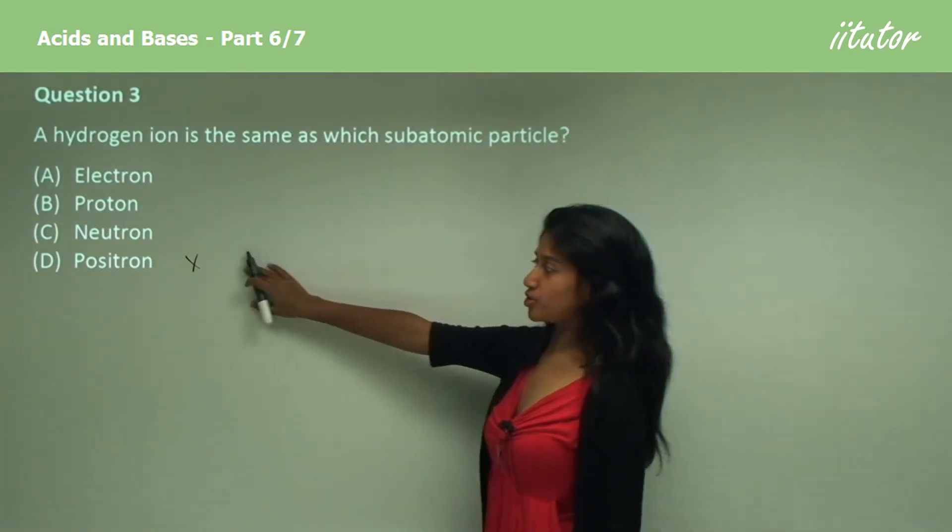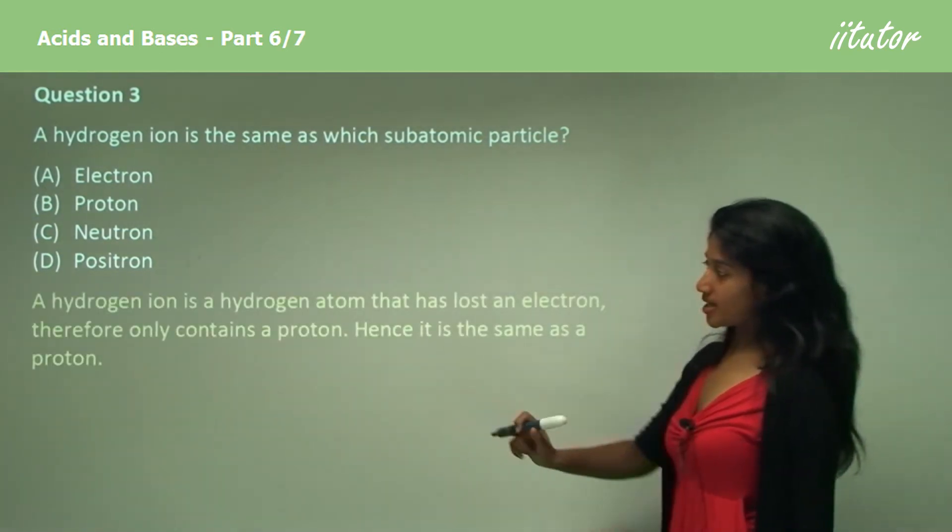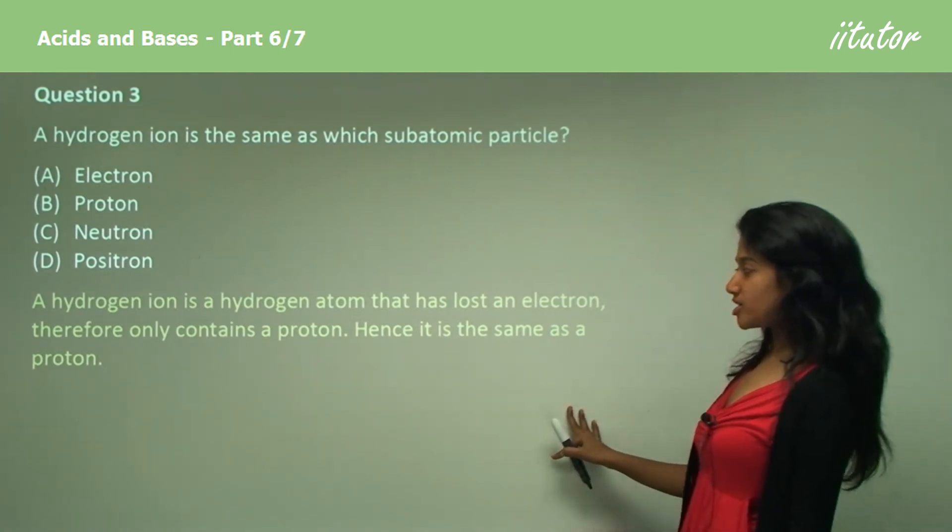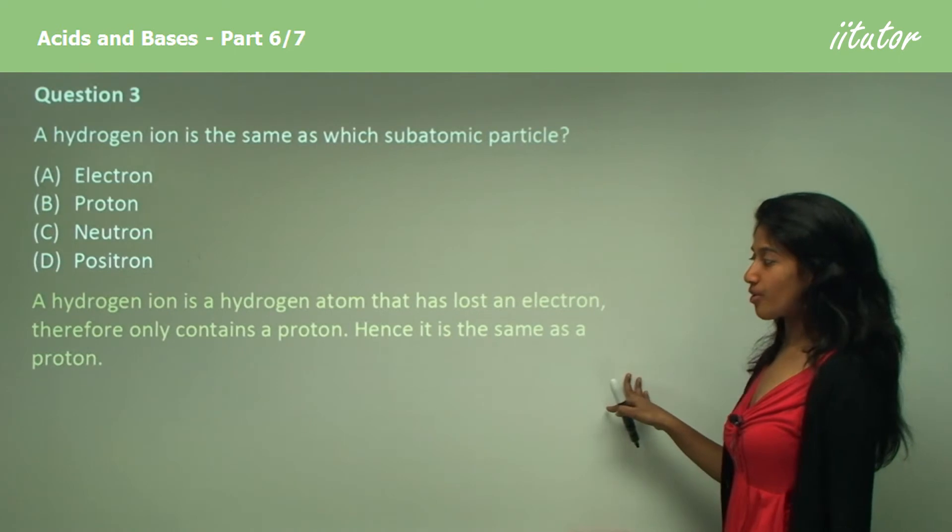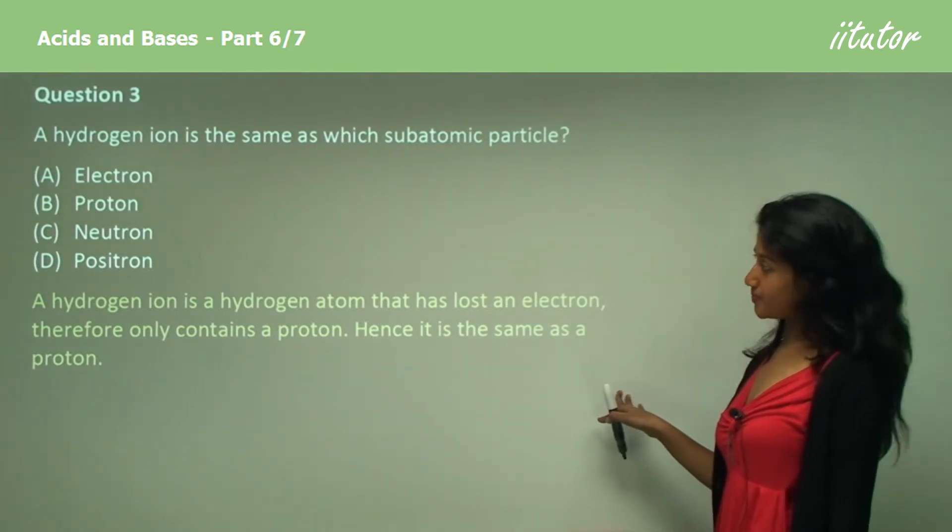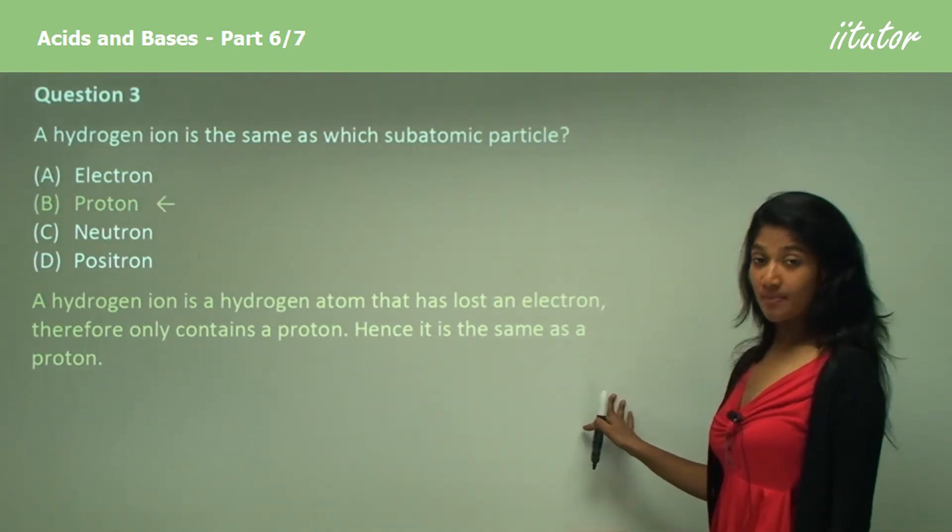So the answer is proton. A hydrogen ion is a hydrogen atom that has lost an electron, therefore only contains a proton. Hence, it is the same as a proton. And the answer is B.